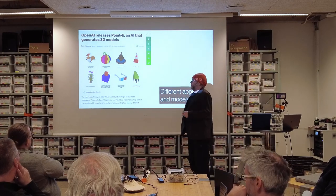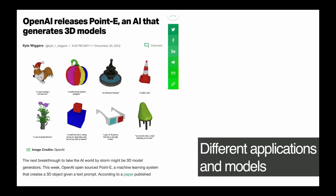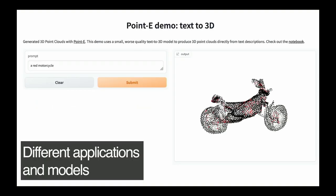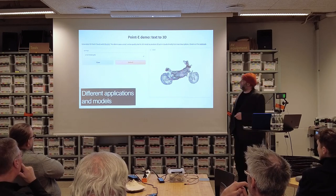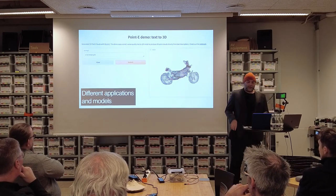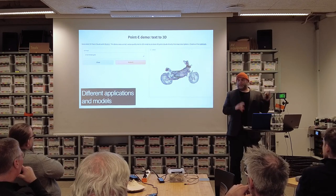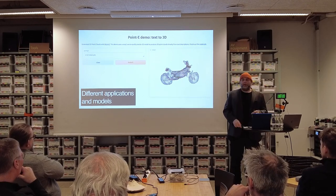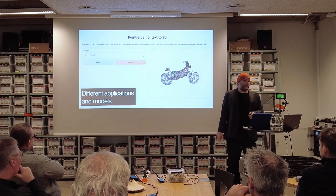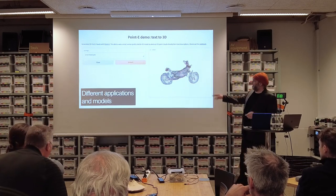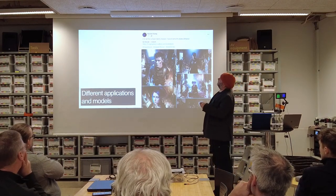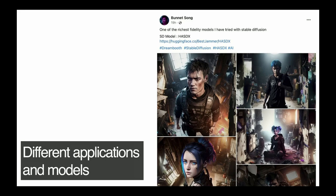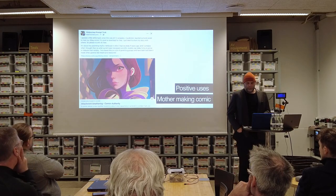We can do text and pictures at the moment. The newest thing is you can also do 3D models — in fact, 3D models are simpler to do than pictures, it's just a smaller market so they haven't done it as much yet. So soon, the fab lab will be: you just type into a computer 'please 3D print me a smurf on a ball' and it's already coming out of the printer. At the moment it doesn't work really well. There are also different models — for example, you can go to Hugging Face and use the HASDX model, which has a very characteristic style.